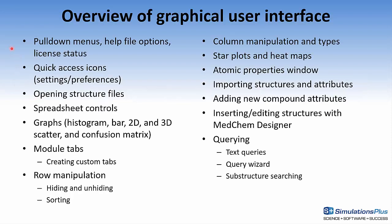This next slide outlines some of the items I'll discuss in the video. I'll start at the top of the Admin Predictor interface and discuss the pull-down menus, also show different options for the help file, and help review the license status. Next, I'll discuss the quick access icons just below the pull-down menus, specifically talking about the settings and the preferences. Then I'll open up a structure file and discuss the different file types that can be opened. Once that's read in, I'll discuss some of the spreadsheet controls, which are the widgets on the left-hand side of the interface. I'll discuss creating graphs, go down to the bottom of the interface, talk about the different tabs for the modules, and show how you can create a custom tab to hold your information.